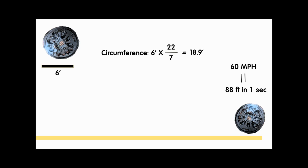We know that if an object is traveling at 60 miles per hour, that is equivalent to traveling at 88 feet per second. So in those 88 feet, how many times does the CANPAC wheel revolve?